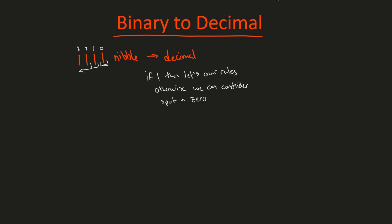So let's see what that looks like. Again, we have one, one, one, one. We start here and answer this question. The rule is: we're going to say two to the n — one times two to the n — and n denotes whatever position you're in, so either zero, one, two, three, and so on to n. It doesn't matter how many bits you have; you can always use this formula. We keep adding this to the next bit until we get to n.